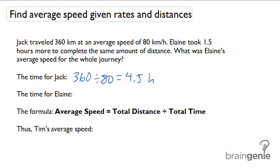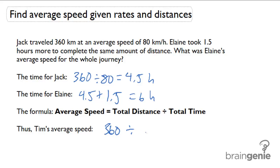Then, the time for Elaine will be 4.5 plus 1.5, which gives us 6 hours. Now we can use the formula: average speed equals total distance divided by total time, which will be 360 divided by 6, equals 60 kilometers per hour.